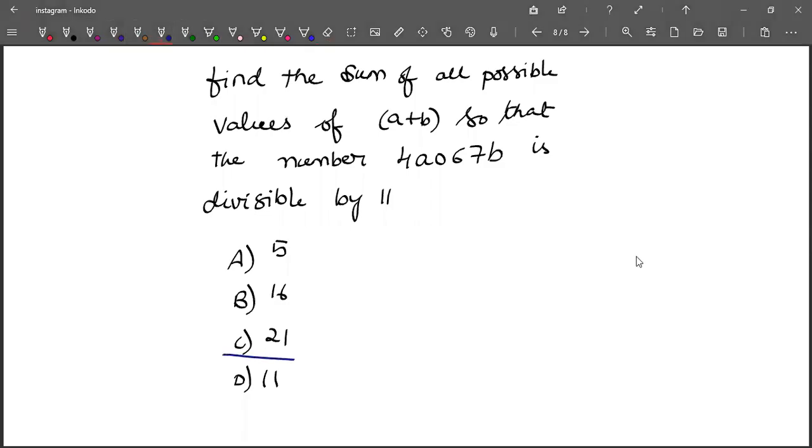The answer for this question is 21. Let's see. For 4a0670b to be divisible by 11, the sum of digits at certain places minus the sum at others—the difference should be equal to 0 or 11 or 22 and so on, right?